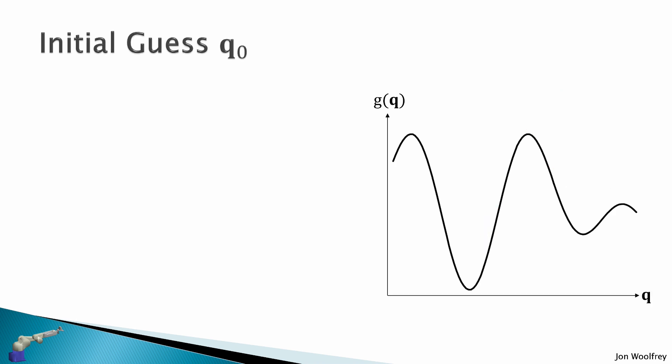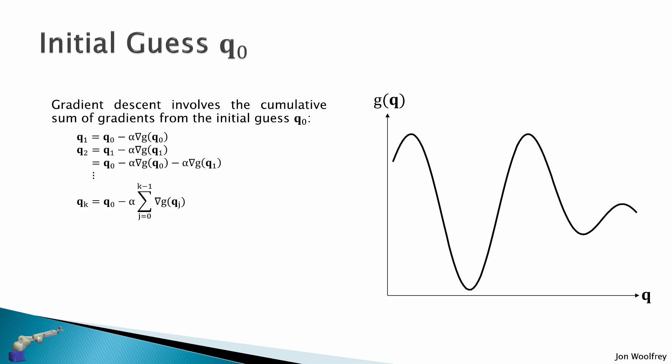We also need to consider the initial guess q0 when we start our optimization. Gradient descent involves the cumulative sum of gradients from the initial guess q0. That is q1 = q0 - α∇g(q0), q2 = q1 - α∇g(q1). And we plug in the solution for q1 and we see that q2 = q0 - α∇g(q0) - α∇g(q1). And we repeat this process indefinitely, we will see that the solution at qk is q0 minus the sum of all gradients up to this point. So our initial guess q0 determines the search direction, and this can lead us to a local minimum or a global minimum.